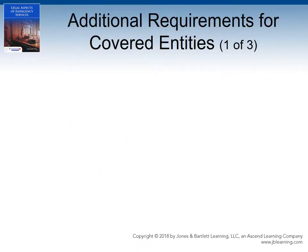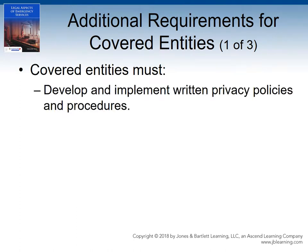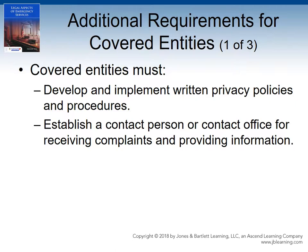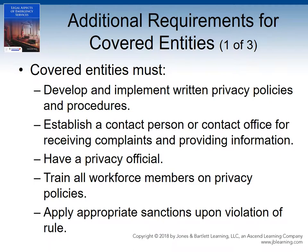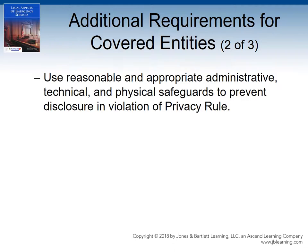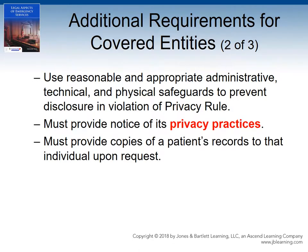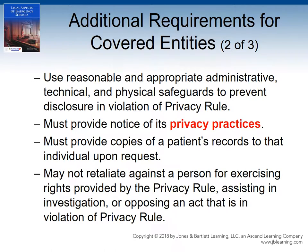The requirements for covered entities do not end there. Covered entities must also develop and implement written privacy policies and procedures, establish a contact person or office for receiving complaints, and maintain a privacy official or officer within the organization who is ultimately responsible for the development, implementation, and assurance of compliance with the organization's privacy policies and practices. All workforce members must be trained on the covered entity's privacy policies, and if there is a violation of the privacy rule, appropriate sanctions must be taken against those employees. The covered entity must use reasonable and appropriate administrative, technical, and physical safeguards to prevent disclosures in violation of the privacy rule, provide notice of its privacy practices, provide copies of a patient's records to the patient upon request, and cannot retaliate against a person for exercising his or her rights under the privacy rule or opposing an act in violation of the privacy rule.